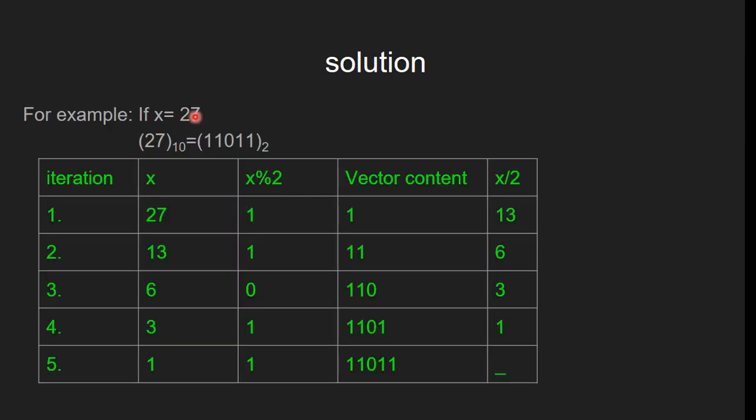Let's visualize it. Let x be 27. Then we have to obtain its binary form. In the first iteration, x is equal to 27. We find x modulo 2, that is 1. And then we push it into the vector. So now the content of vector is 1. And then finally, we update x by dividing it with 2 and we get 13.